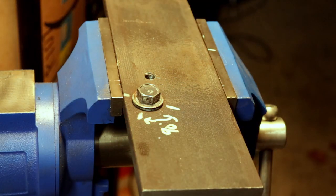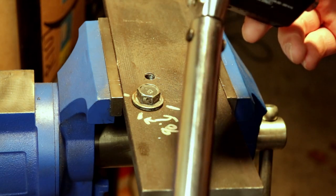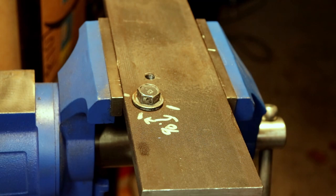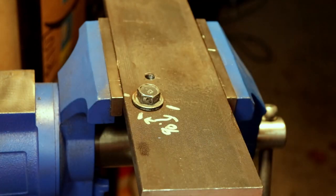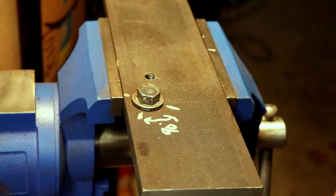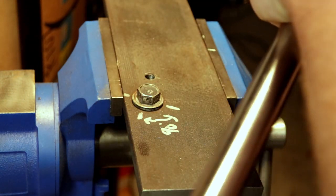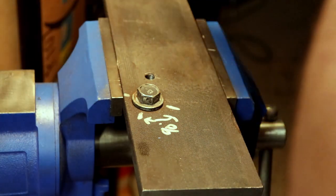Alright, so that's on there. We're going to torque this down. I've got this set to 120 foot-pounds. We're going to see how that works, and then we'll see if we can't redeem that half-inch Milwaukee.